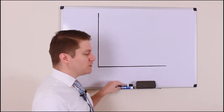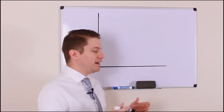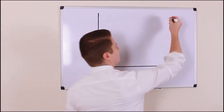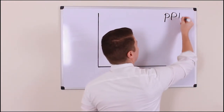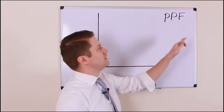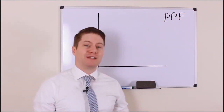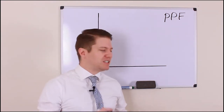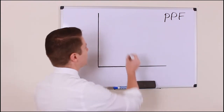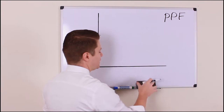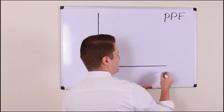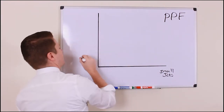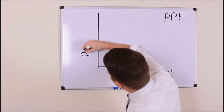First of all, we're going to use your book to give you the production possibility frontier — PPF for short. If you need a better definition, that'll be in your book. I want to make these videos as short as possible to give you a quick understanding. The first thing we're going to do is look at the curve. On the x-axis we have quantities of small jets, and on the y-axis we have dreamliners.